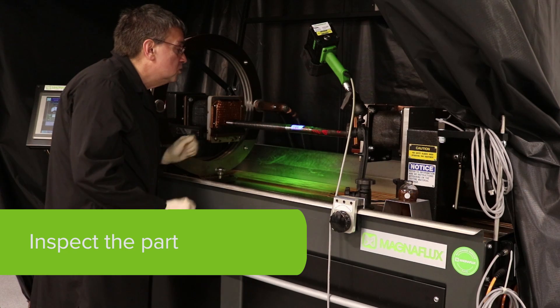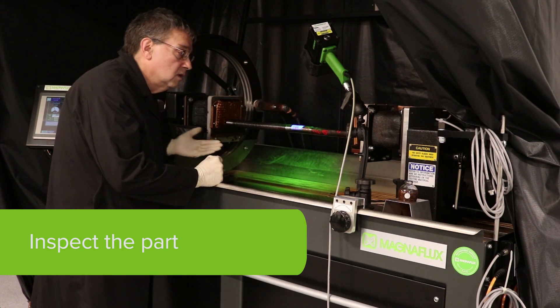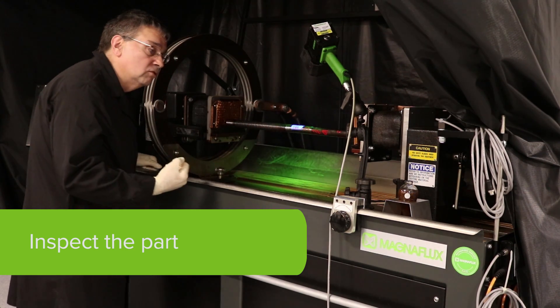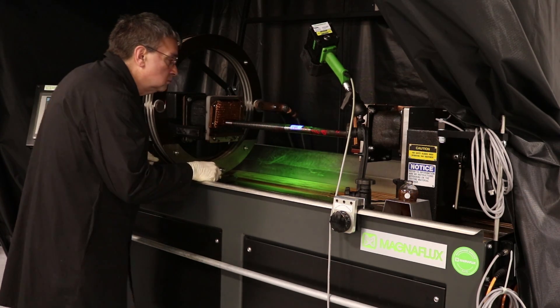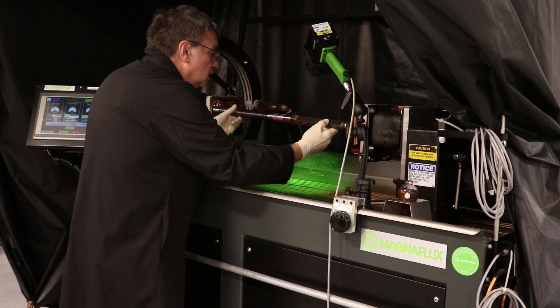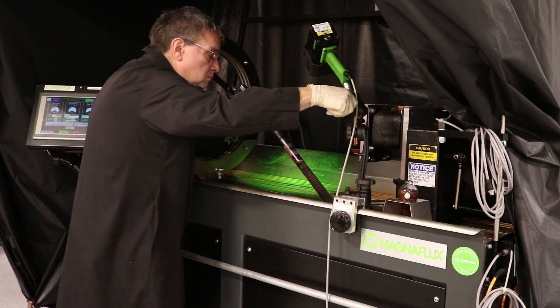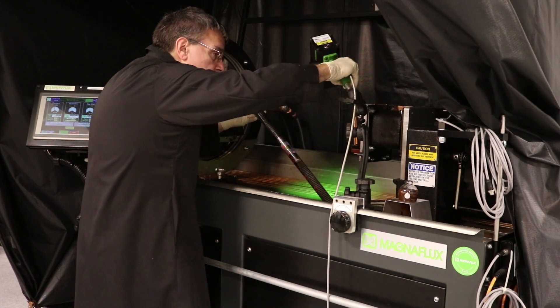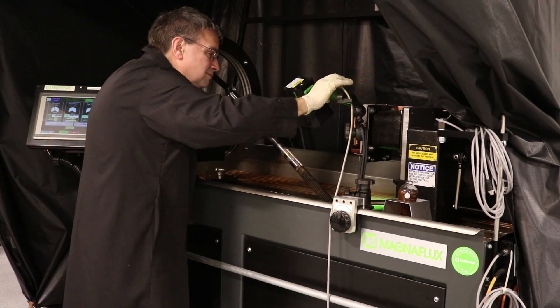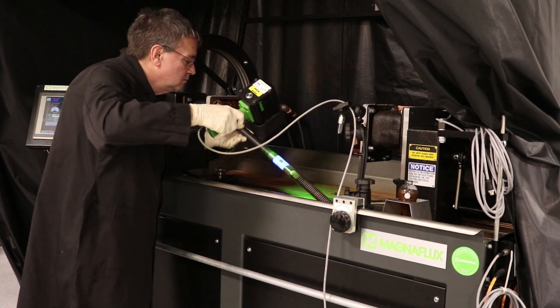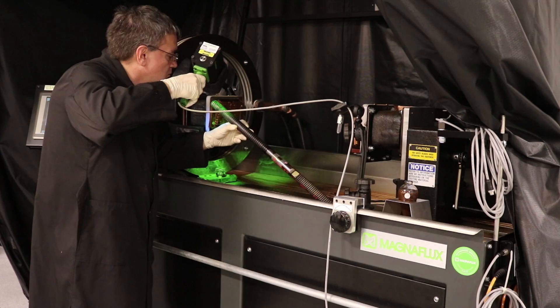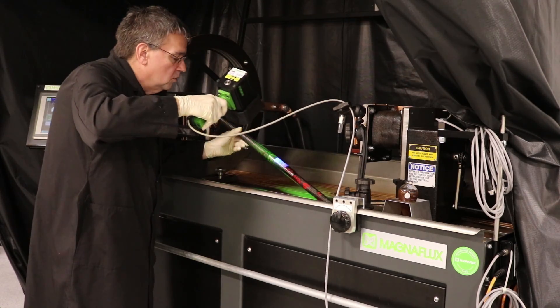Once you have done that, then you would inspect the part for any defects. To inspect the part, you may actually have to unclamp the part and physically look at it. Depending on the part challenge or your configuration, you will inspect all areas.